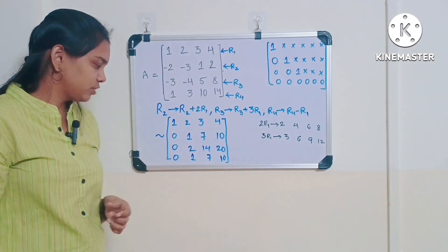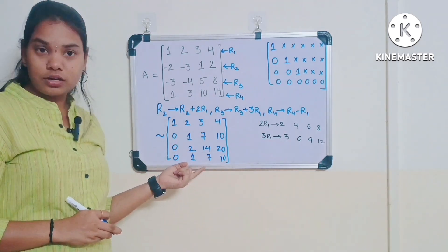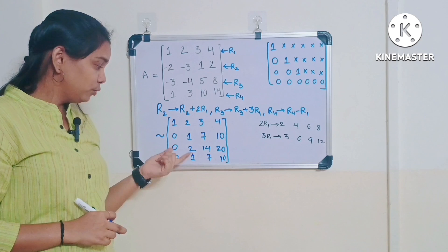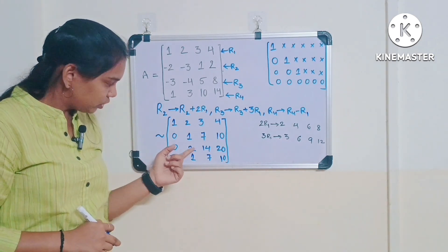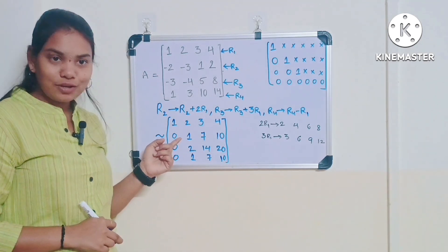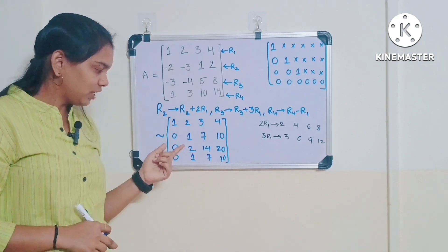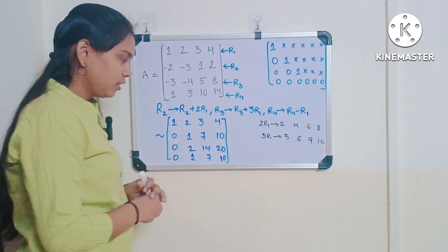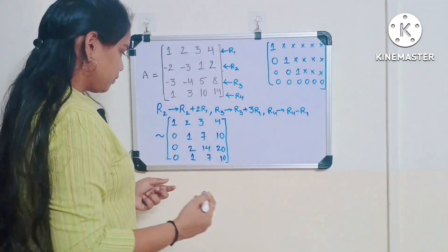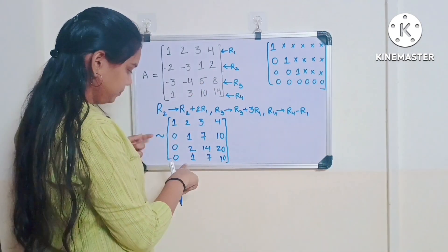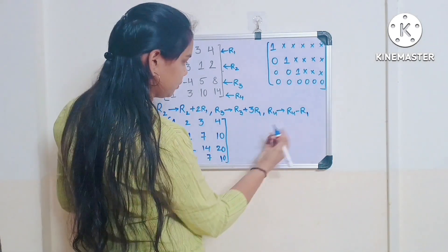We now have the resulting matrix. Observing it: R2 and R4 are the same, so using R2 we can convert R4 to all zeros. Also, R3 is 2 times R2, so using R2 we can convert R3 to all zeros as well. We will change R3 and R4 using R2 — this completes the first step.